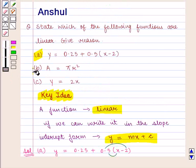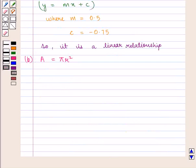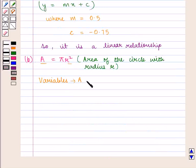In the second part we have the relation A = πr², which is the area of the circle with radius r. Here variables are A and r, and we see that the power of r is 2.